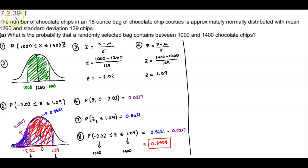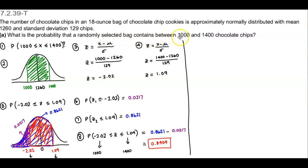Section 7.2.39-T. The number of chocolate chips in an 18-ounce bag of chocolate chip cookies is approximately normally distributed with a mean of 1,260 and a standard deviation of 129 chips. What is the probability that a randomly selected bag contains between 1,000 and 1,400 chocolate chips?